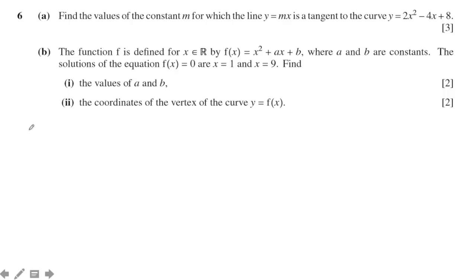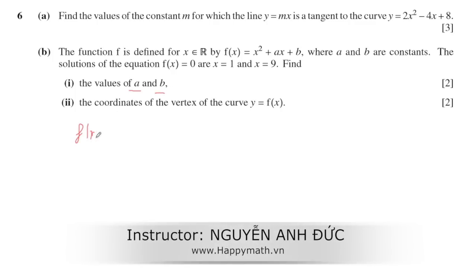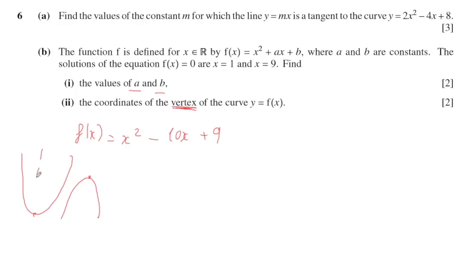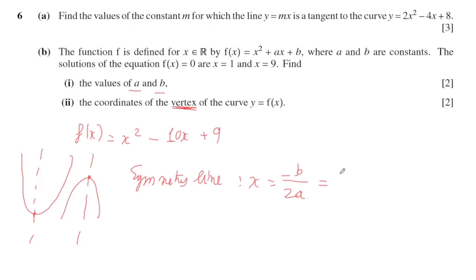Next, find the coordinates of the vertex of the curve. With the values for a and b, the equation becomes x squared minus 3x plus 2. The vertex is the maximum or minimum point of the quadratic graph. I use the axis of symmetry formula: x equals minus b divided by 2a, which gives x equals 3 divided by 2, so x equals 1.5.